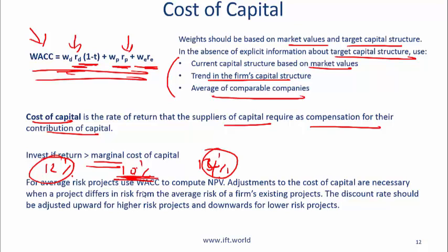For average risk projects, use WACC to compute NPV. Adjustments to the cost of capital are necessary when a project differs in risk from the average risk of a firm's existing projects. The discount rate should be adjusted upward for higher risk projects and downward for lower risk projects.